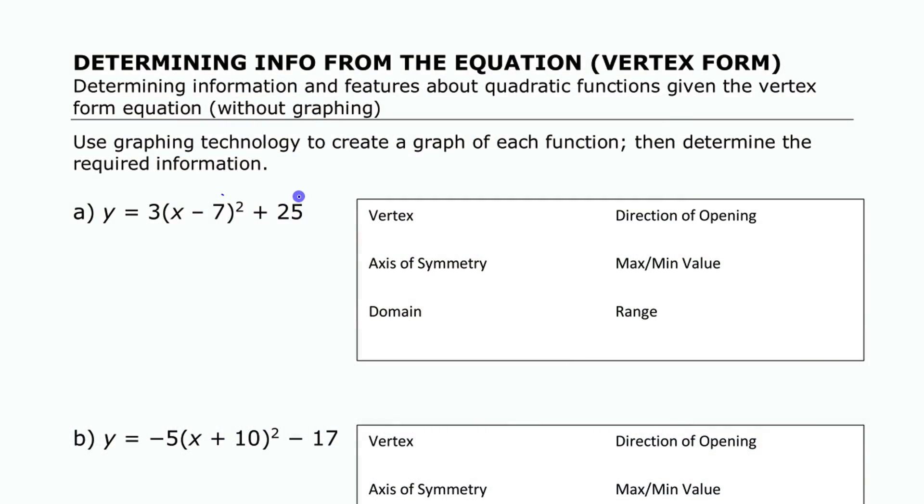Alright, so we're going to look at a few different quadratic functions whose equations are given in vertex form and use what we know about the parameters in that form, a, h, and k, to determine a bunch of that information just by visualizing the graph. Not creating a really detailed graph, but just something simple enough to get those pieces of information.